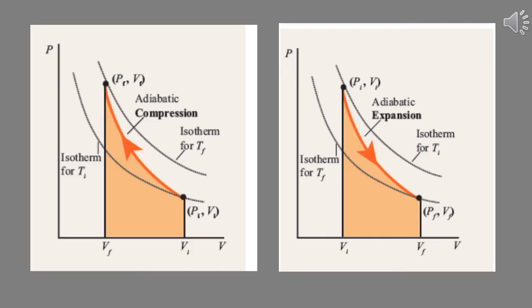To calculate work done in adiabatic compression and adiabatic expansion processes, we can draw two PV diagrams. In the first graph, the area under the adiabat gives the work done in adiabatic compression — the shaded portion represents this area. In the second graph, another adiabat is drawn for the expansion process, and the area under that curve gives the work done in adiabatic expansion.